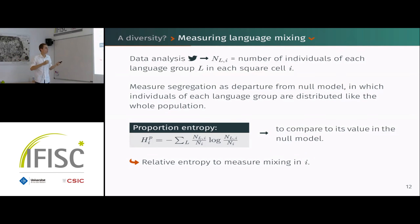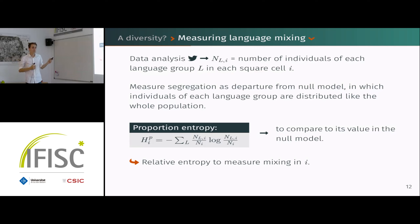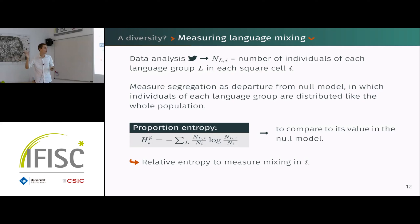What we then want to do is measure how much mixing varies in these areas — or conversely, how much segregation varies between groups. We consider segregation as a departure from a null model in which people would be distributed exactly like the whole population regardless of their language group.